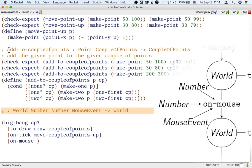We cannot just give add-to-coupleofpoints to Big Bang. If we do that, it's not going to have the right signature. So, we need to give Big Bang a slightly different function, which we can write using add-to-coupleofpoints, but which is not the same as add-to-coupleofpoints.